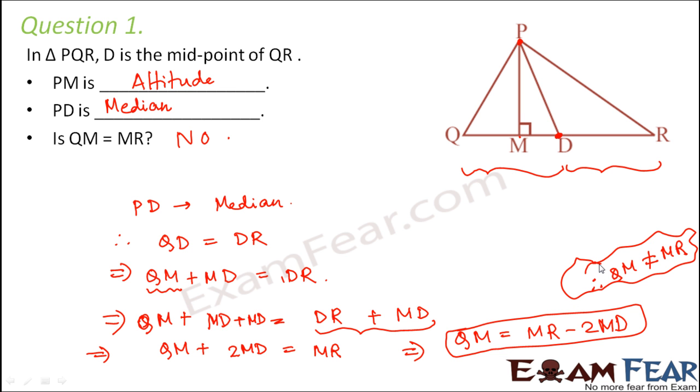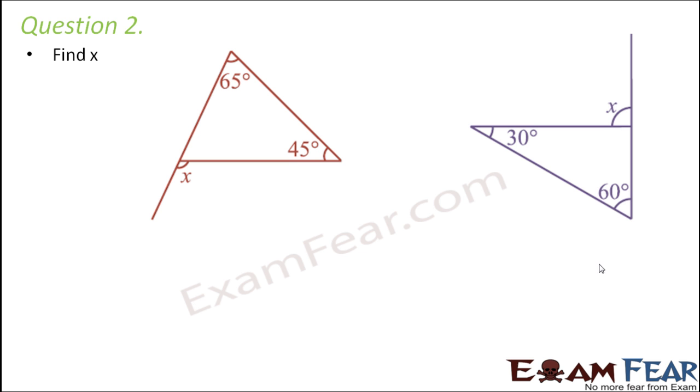Question number 2: Find X. In this diagram, two angles of the triangle are given and we have to find X. Now can you tell me what is X? Which type of angle is X for this triangle? Is it located inside the triangle? No.